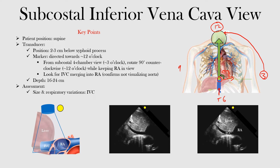This can be a good way to look at fluid status. We look at the size and respiratory variations of the inferior vena cava. Notice that we're going over the liver — you can see the liver positioned here. And we have the inferior vena cava going into the right atrium.